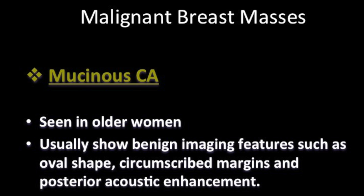The fifth variety, mucinous carcinoma or colloid carcinoma, is seen in older women. These cancers too show benign imaging features such as oval shape, circumscribed margins, and posterior acoustic enhancement on ultrasound.